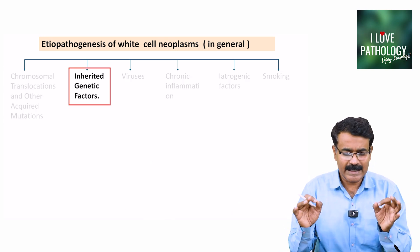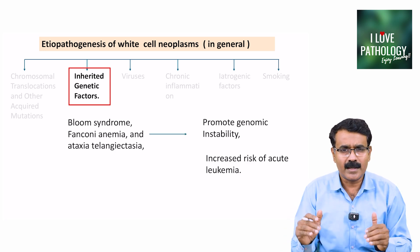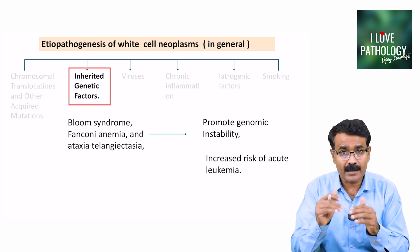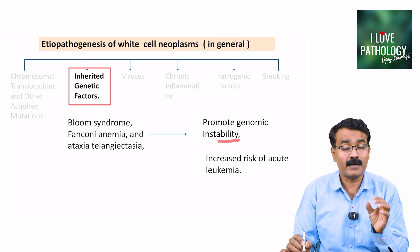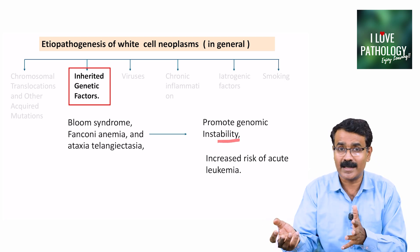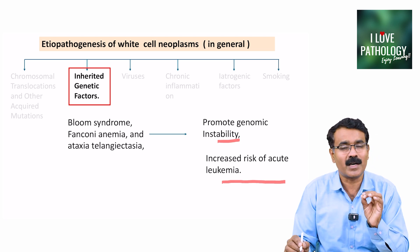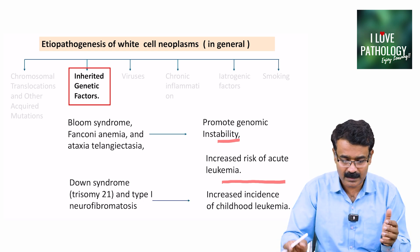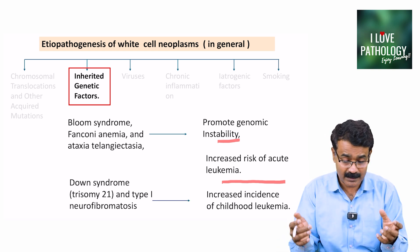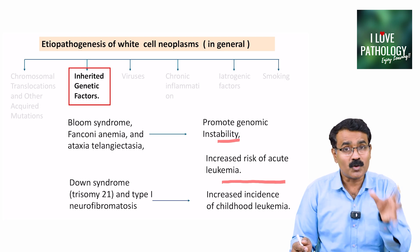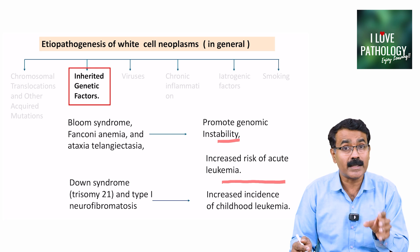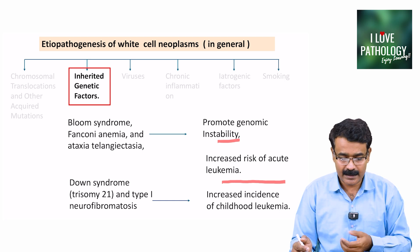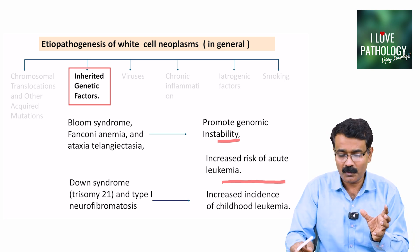Moving on to inherited genetic factors. Inherited genetic syndromes like Bloom syndrome, Fanconi anemia, and Ataxia telangiectasia promote genomic instability, increasing the chance of mutations and thus the risk of acute leukemias. Down syndrome and type 1 neurofibromatosis are also examples of inherited genetic factors seen to increase the risk of childhood leukemias.